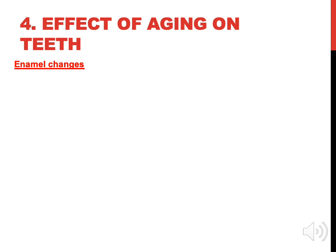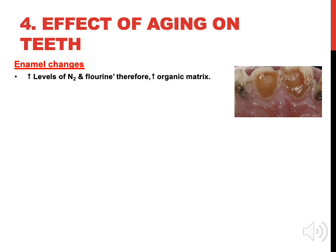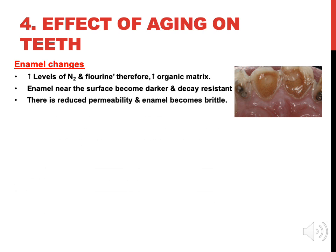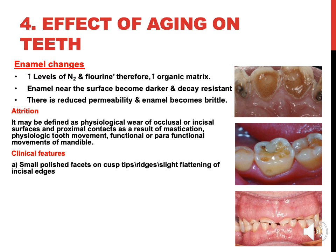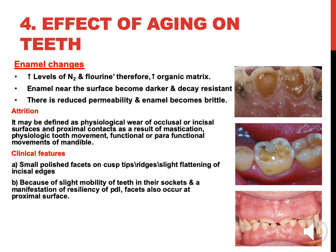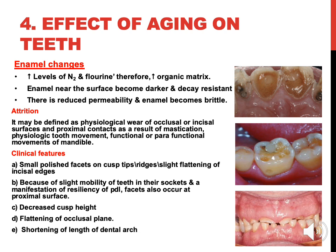Effect of aging on teeth — enamel changes: there are increased levels of nitrogen and fluorine, therefore increased organic matrix. Enamel near the surface becomes darker and more decay resistant. There is reduced permeability and enamel becomes brittle. Attrition may be defined as physiological wear of occlusal and incisal surfaces and proximal contacts as a result of mastication, physiologic tooth movement, and functional or parafunctional movements of the mandible. Clinical features include small polished facets on cusp tips and ridges, slight flattening of incisal edges, and facets at proximal surfaces. There is decreased cast height, flattening of the occlusal plane, and shortening of the length of the dental arch.